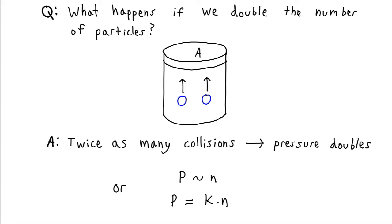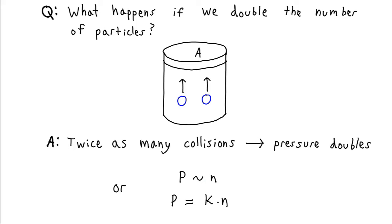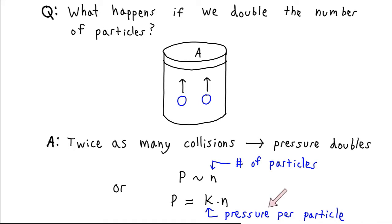If we put three particles in, we triple the pressure; four particles, we quadruple the pressure. So we can write that pressure is proportional to the number of particles, which we represent with n. We can replace this proportionality symbol with an equal sign and include a proportionality constant. That constant represents the pressure per particle — so if n equals one, pressure equals k; if n equals two, pressure equals 2k. This is how we represent that pressure is proportional to the number of particles in our container.